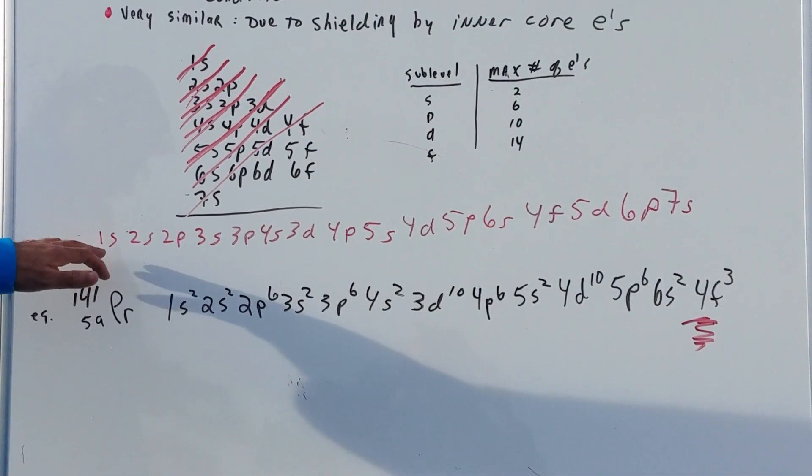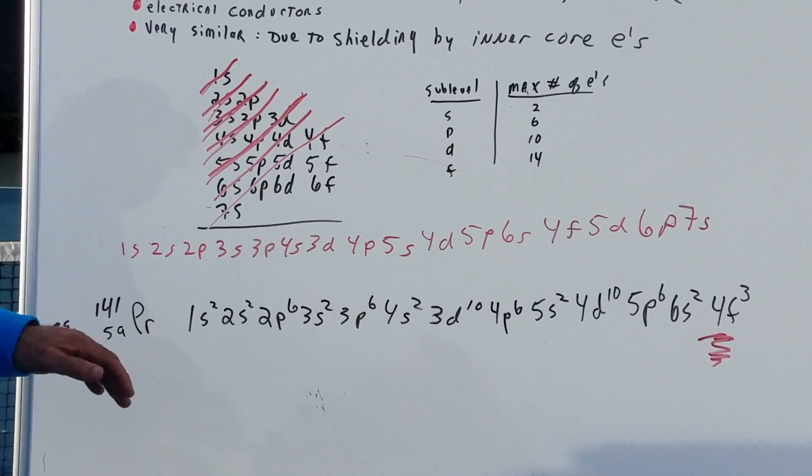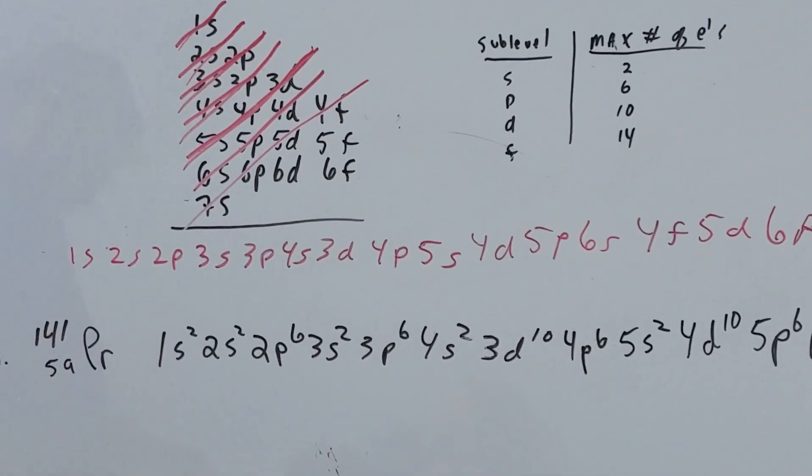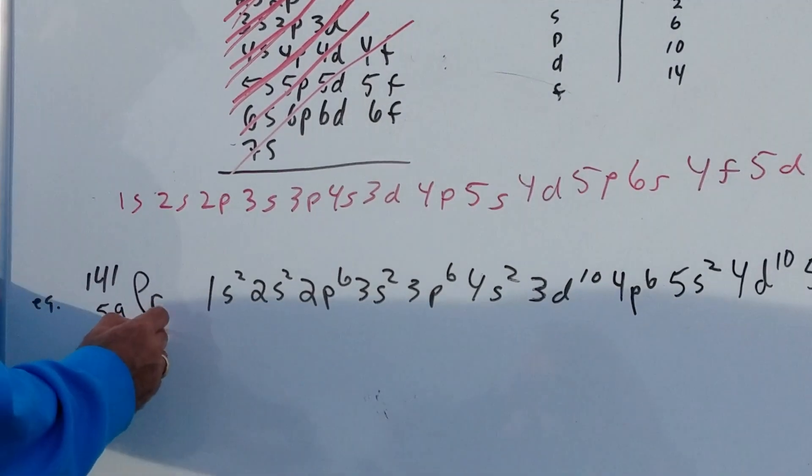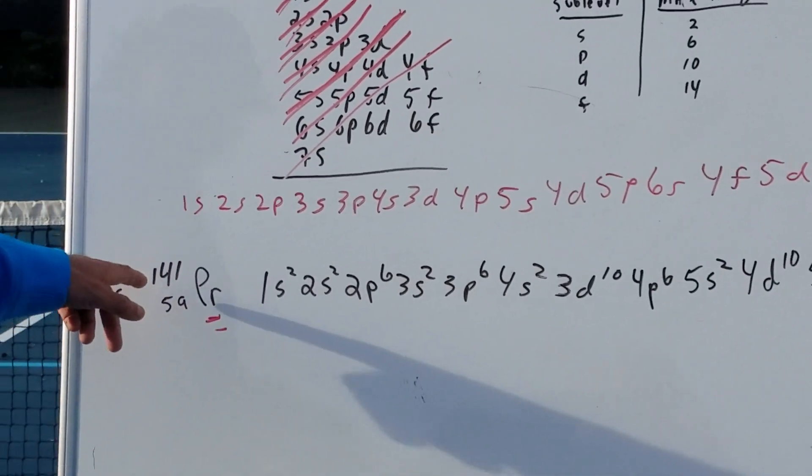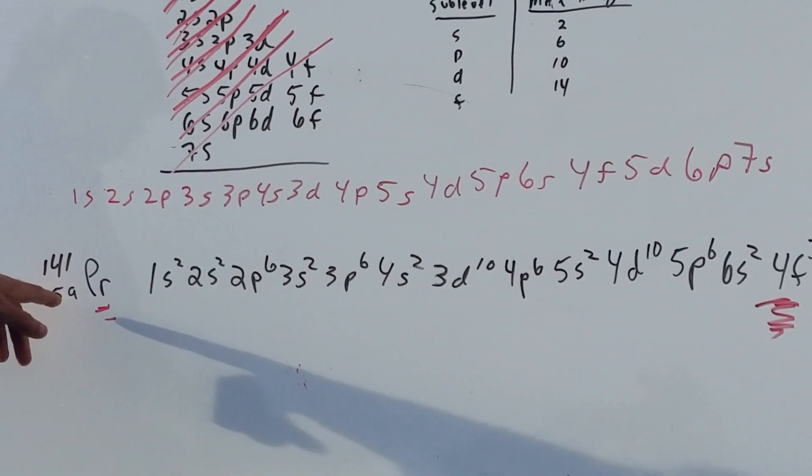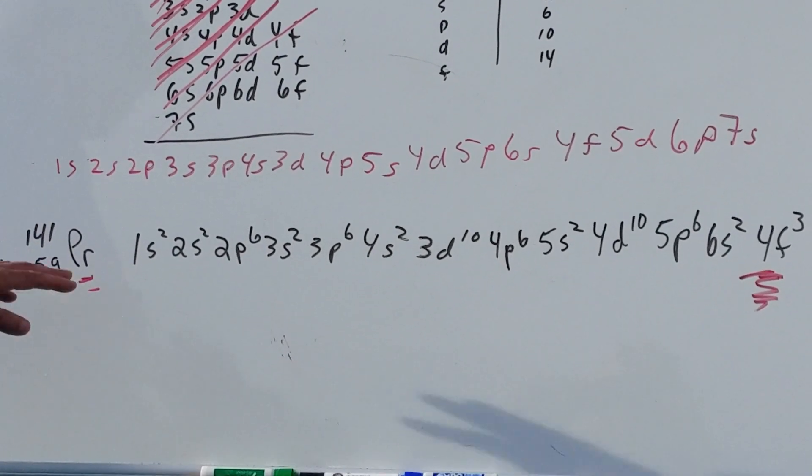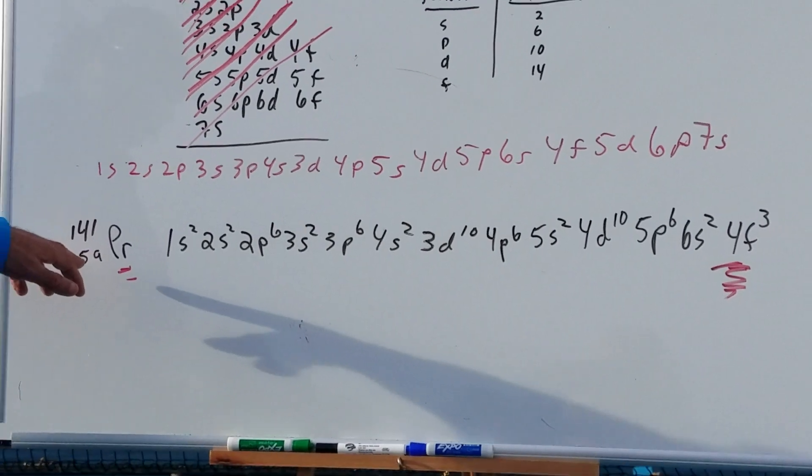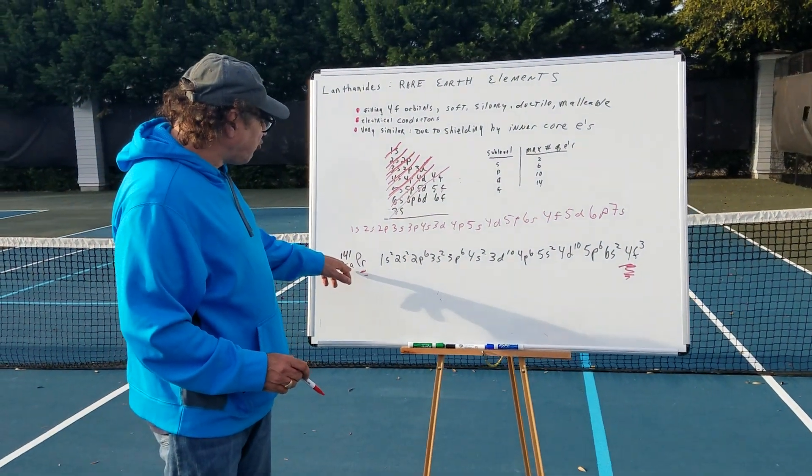So this is going to be the core that you need that'll give you the answer most of the time. As an example, we're going to use an element you've probably never heard of called praseodymium. Praseodymium has a mass of 141 and an atomic number of 59. So obviously 59, I personally think is a little too much for the DAT or the MCAT or the OAT. But let's just do it as an exercise and shoot for 59.